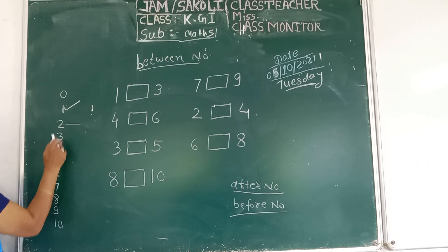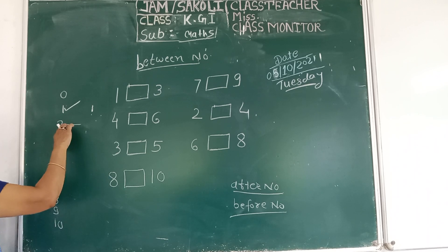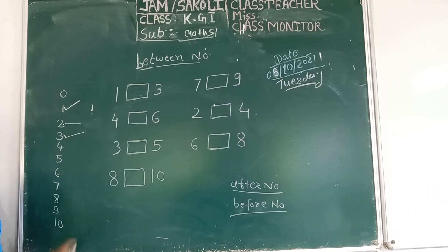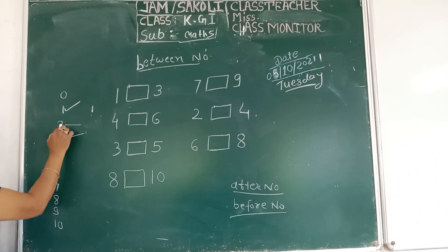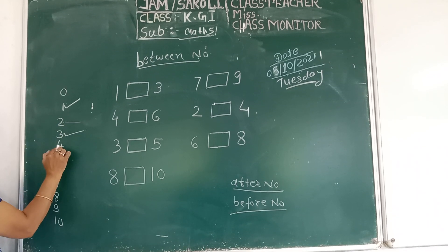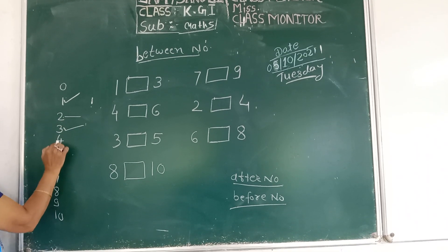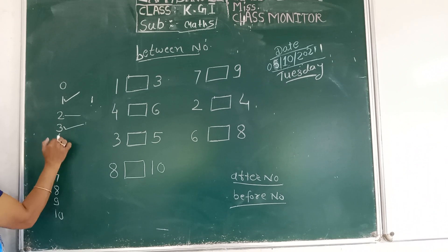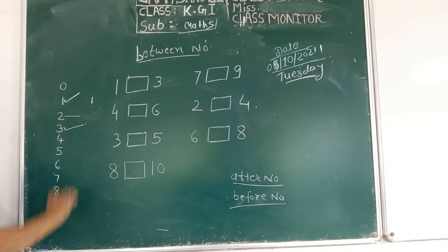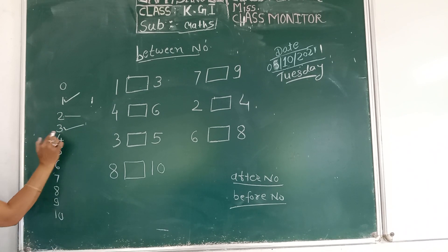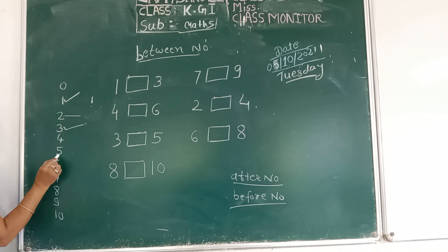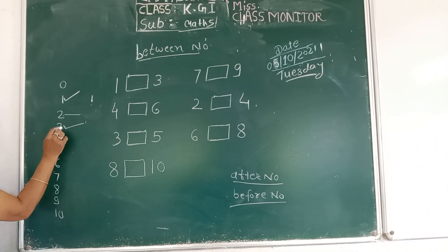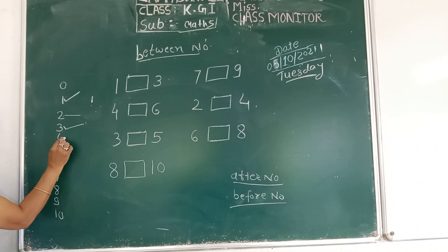Two, three. Two, three. So between two and four — two, four — the between number is three. Two, three, four.